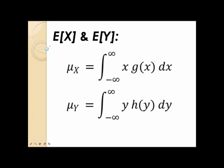For the means of x and y, we'll be using the marginal distributions of the two random variables. The mean of x is equal to the integral from negative infinity to positive infinity of x times the corresponding marginal density g of x dx. Similarly, the mean of y is equal to the integral of y times its corresponding marginal density h of y dy. So we need to derive first the marginal densities g of x and h of y to determine the expected values of x and y.